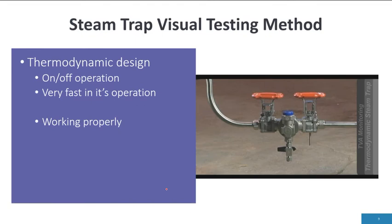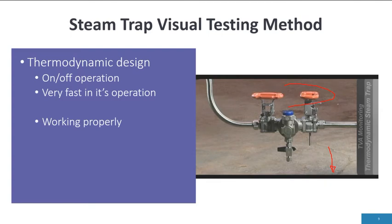As you're seeing, visual testing is very simple. Here is a thermodynamic design — another one of the different steam trap designs we have. It is on-off, but the thermodynamic trap is very fast in its operation. As the handle is activated, you'll see the distinct on-off operation. This trap is working properly — in the off cycle, there is no steam or condensate coming out of it, and when it comes to the cycle mode, you'll see the discharge.